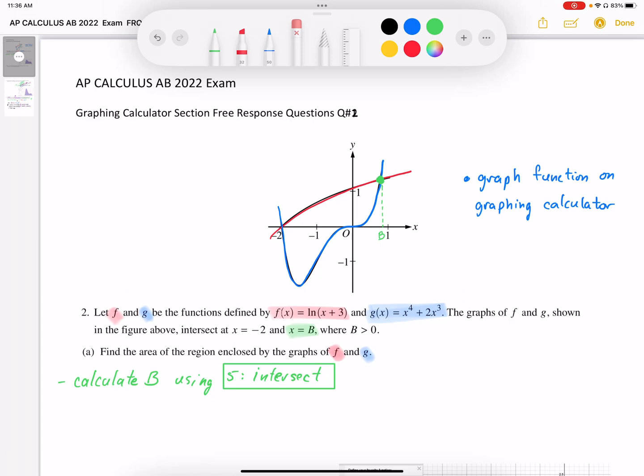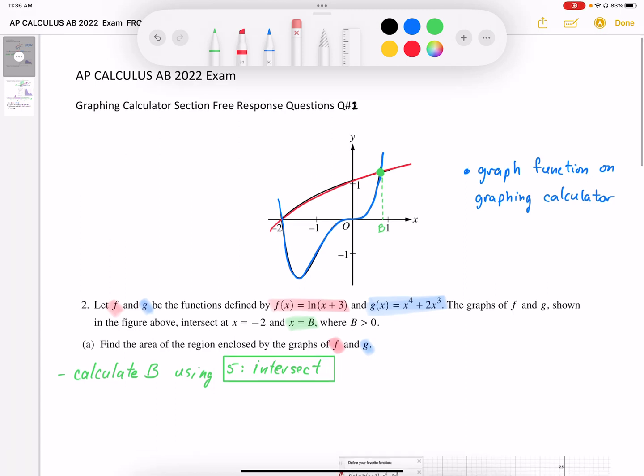Question number two. This is a graphing calculator problem. Let f and g be functions defined by f(x) = ln(x+3) and g(x) = x^4 + 2x^3. The log function is in red and the polynomial function is in blue.